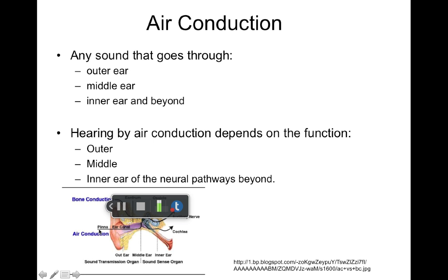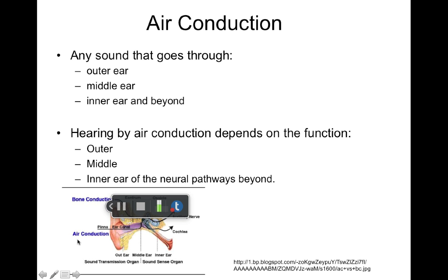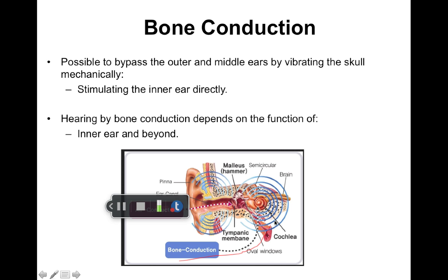Air conduction goes through the outer ear, the middle ear, the cochlea, and the auditory nerve. With bone conduction, we skip the outer ear and the middle ear and directly stimulate the cochlea, sending the message to the auditory nerve — the hearing process is the same. We're only stimulating the cochlea and the auditory nerve. Bone conduction skips the air conduction pathway and directly moves the fluid in the cochlea.